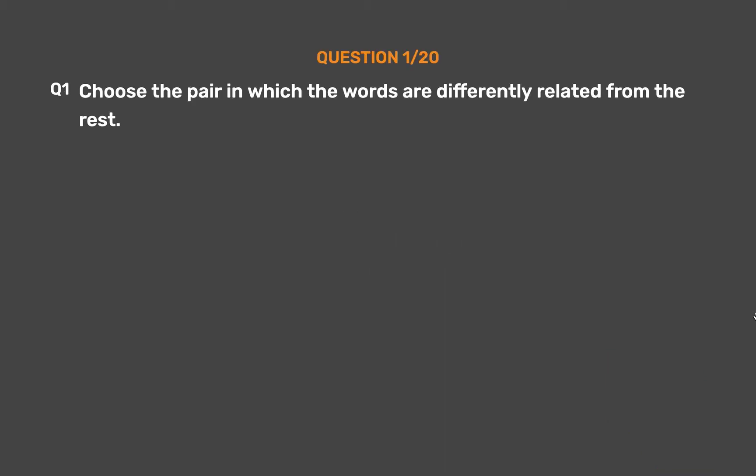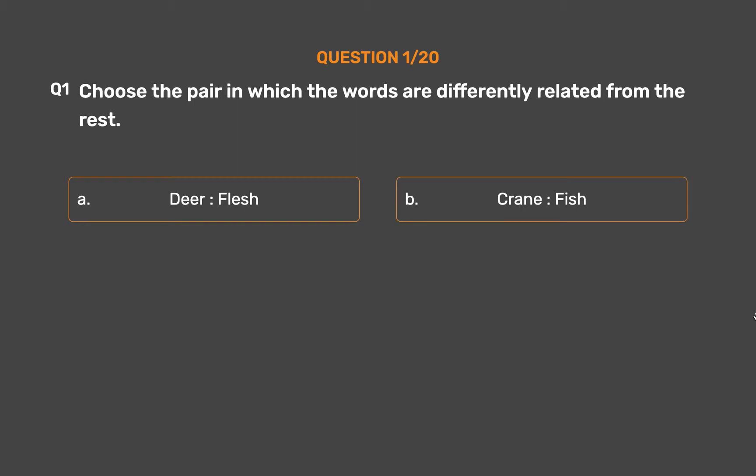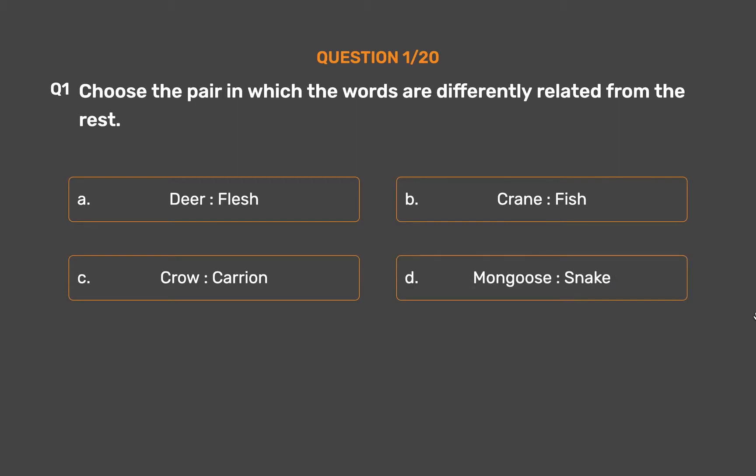Question number 1. Choose the pair in which the words are differently related from the rest. Option A: Deer, Flesh. Option B: Crane, Fish. Option C: Crow, Carrion. Option D: Mongoose, Snake.